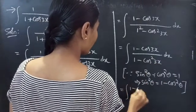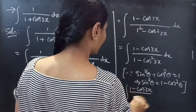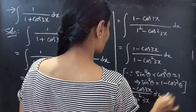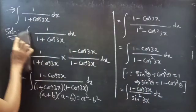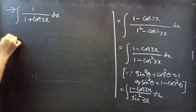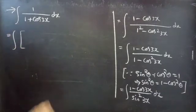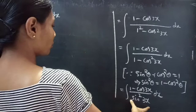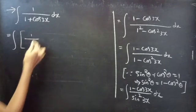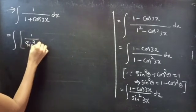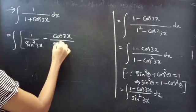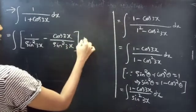So this equals integral of (1 minus cos 3x) by sin²(3x) dx.